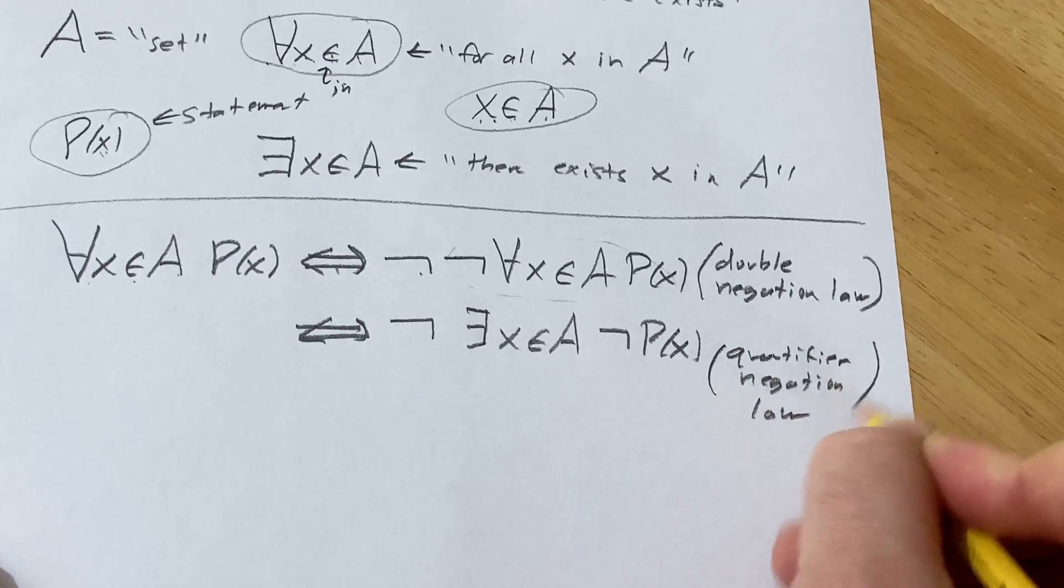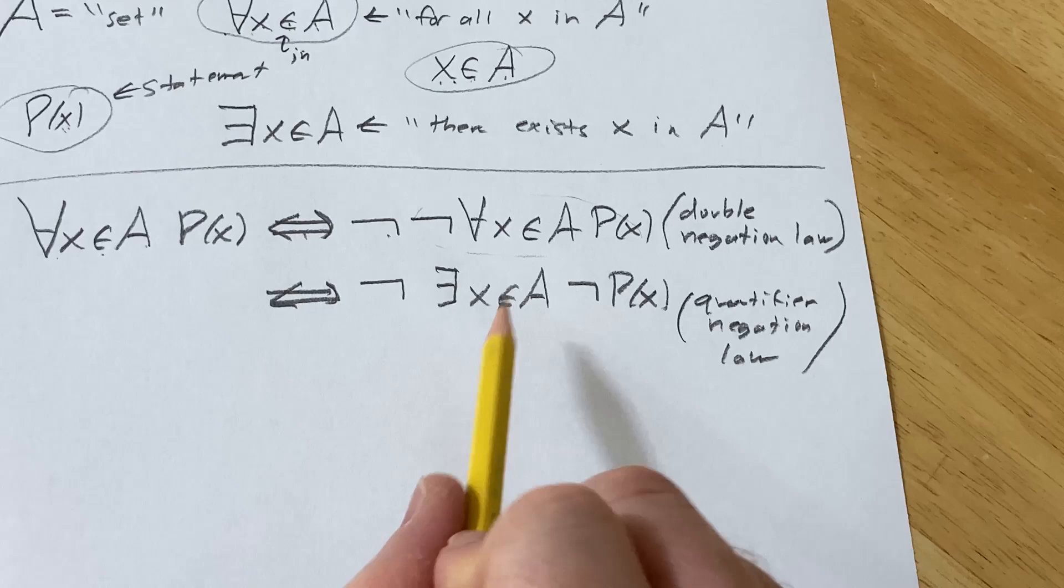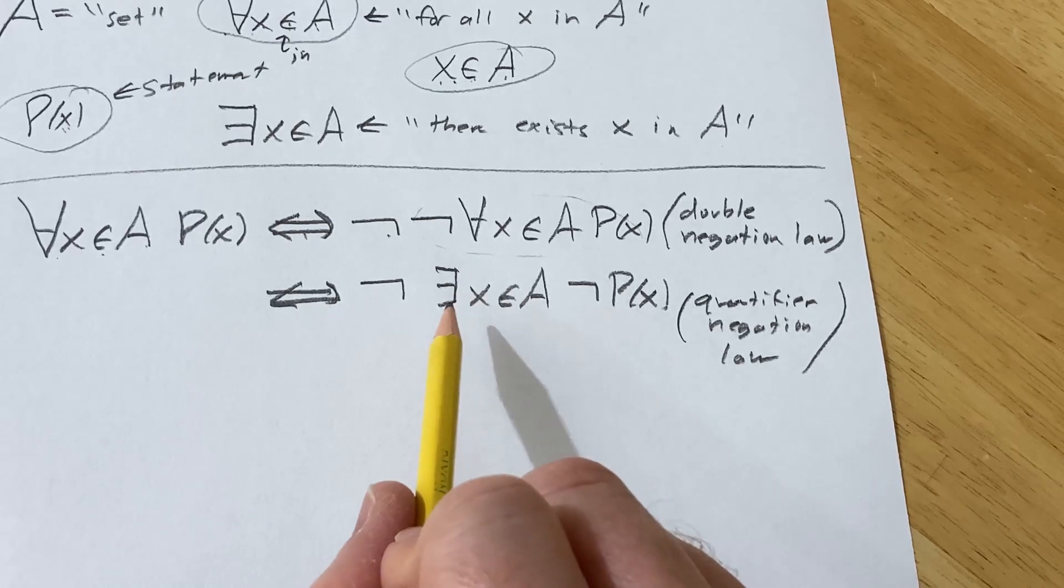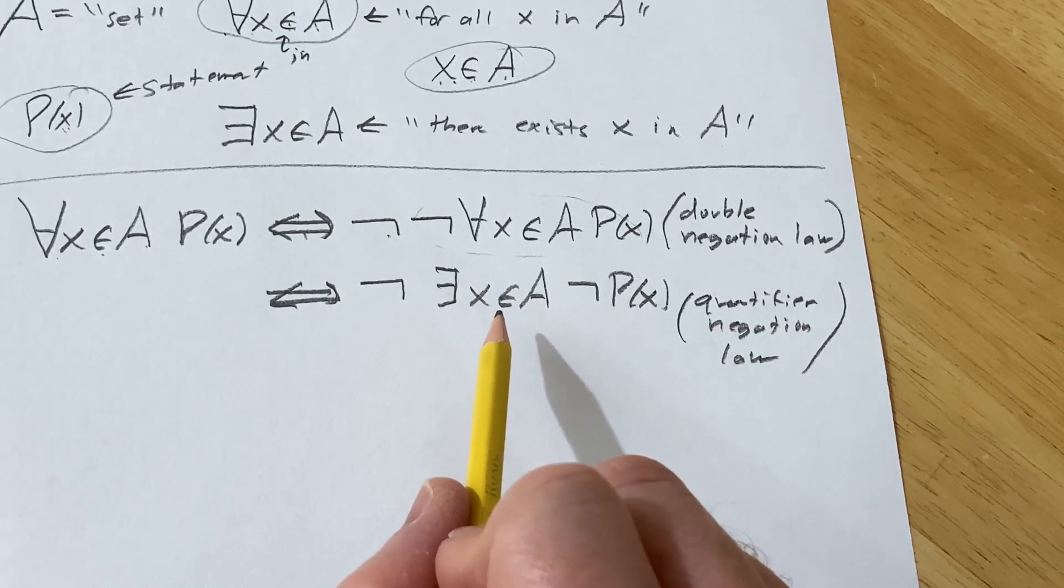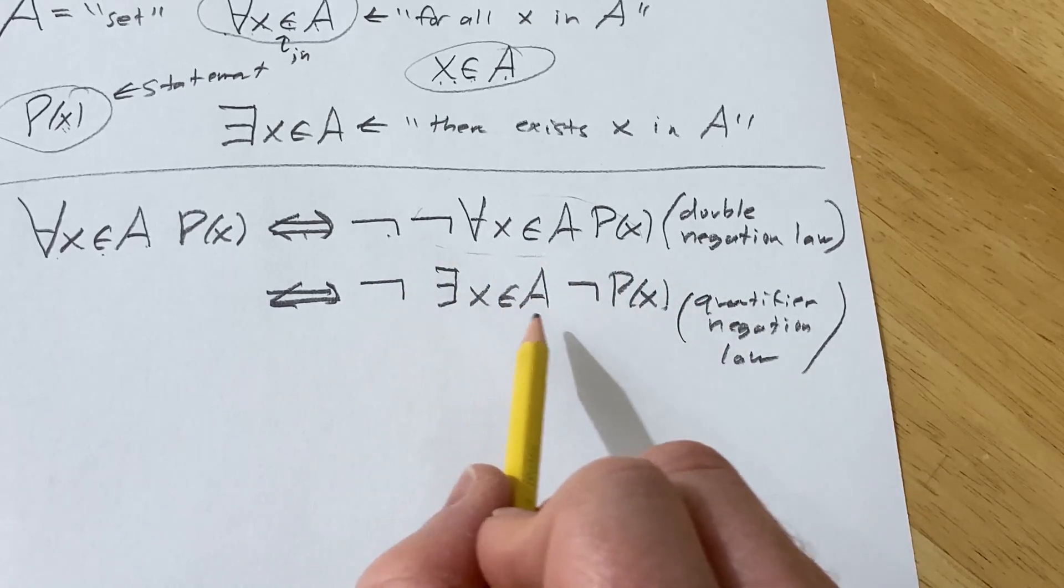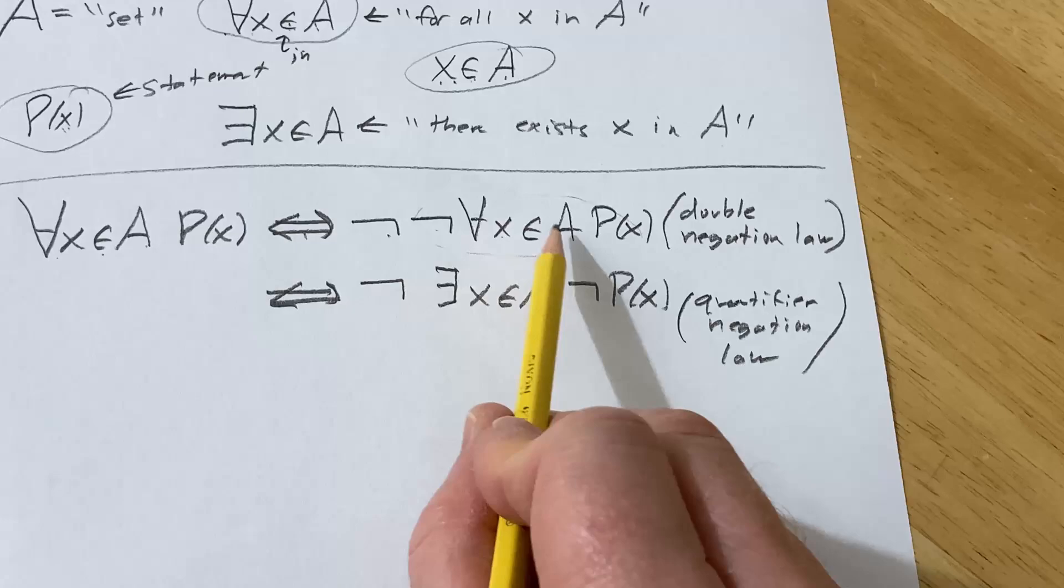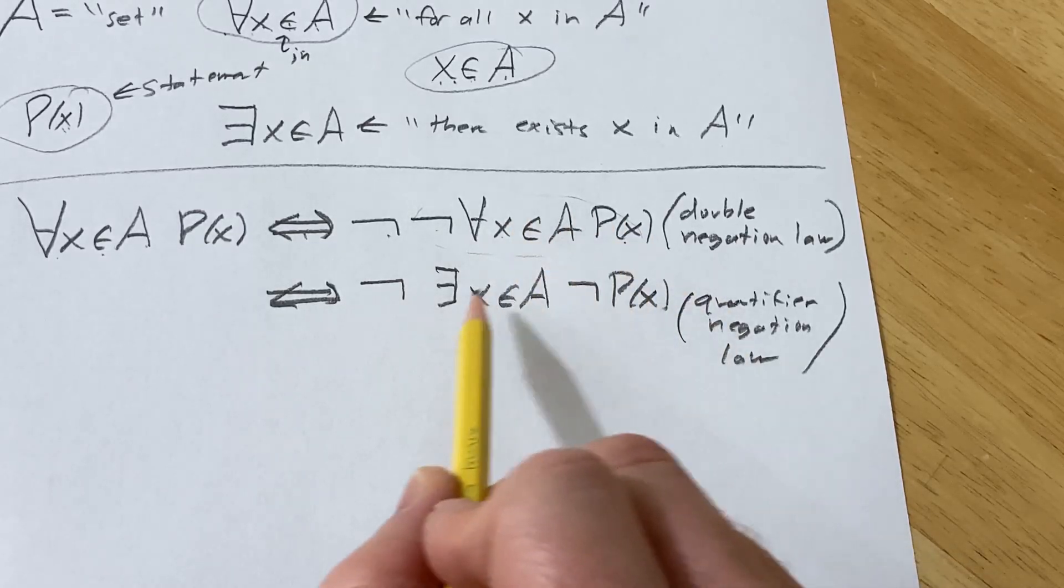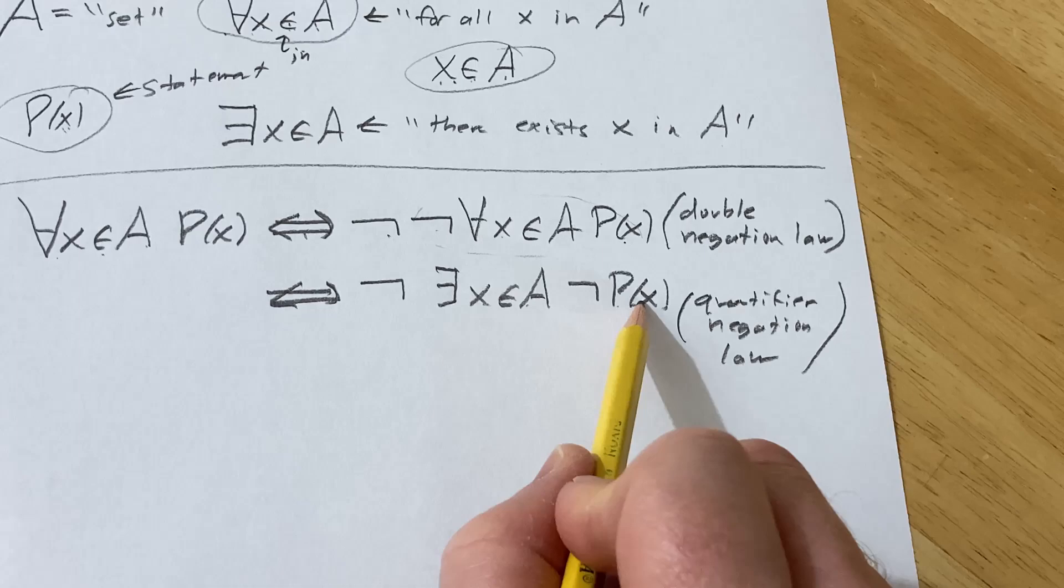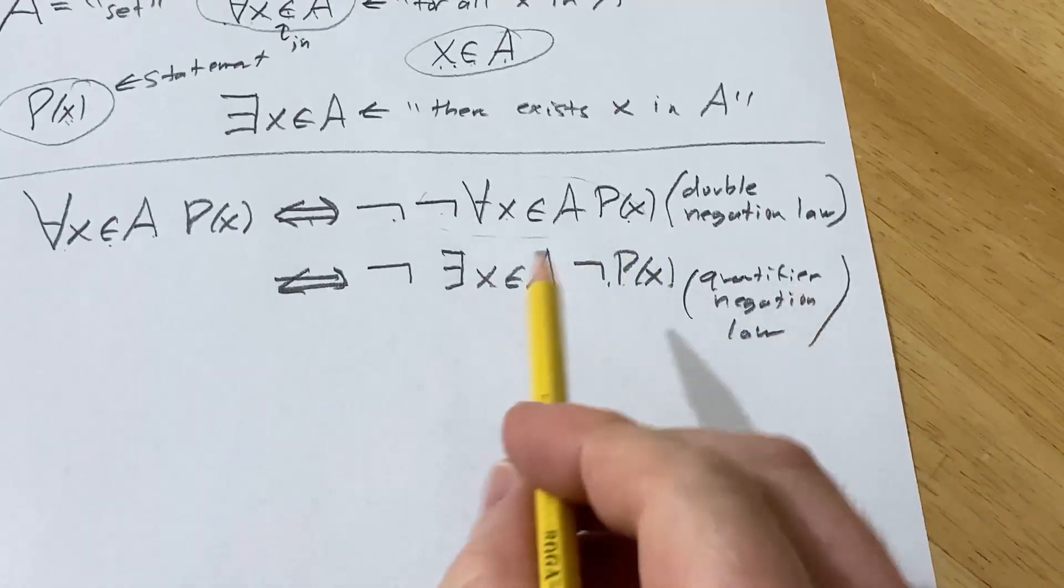This is one of the most important ones, by the way, if you ever study calculus and you do proofs in calculus, this is really, really important, like to negate the definition of a limit, this is the one you would use, right? You're negating a for all statement. So for all X in A, P(X), the opposite of that is there exists an X in A such that P(X) is false. Now here's the thing.